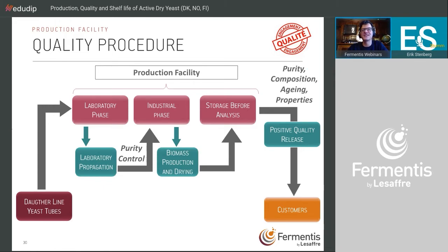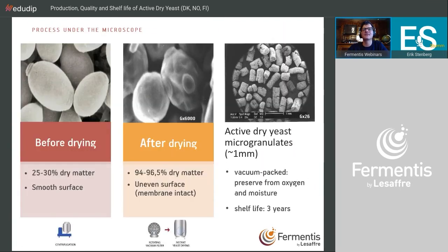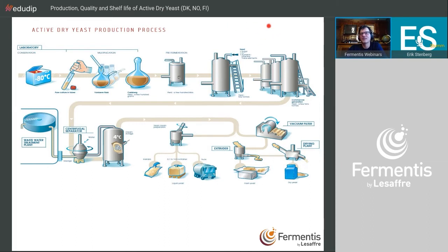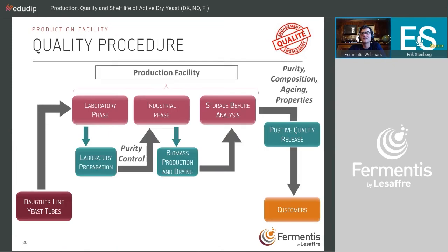Why so many purity checks? In the early lab phases, all propagation is done with sterile air — completely pure. But starting from larger volumes, you can no longer use sterile filtration because the required air flow is too high for a sterile filter to handle, so we use deep filtration instead. This means there's always a possibility that an airborne contaminant could enter the tank, which is why we do extensive purity monitoring.